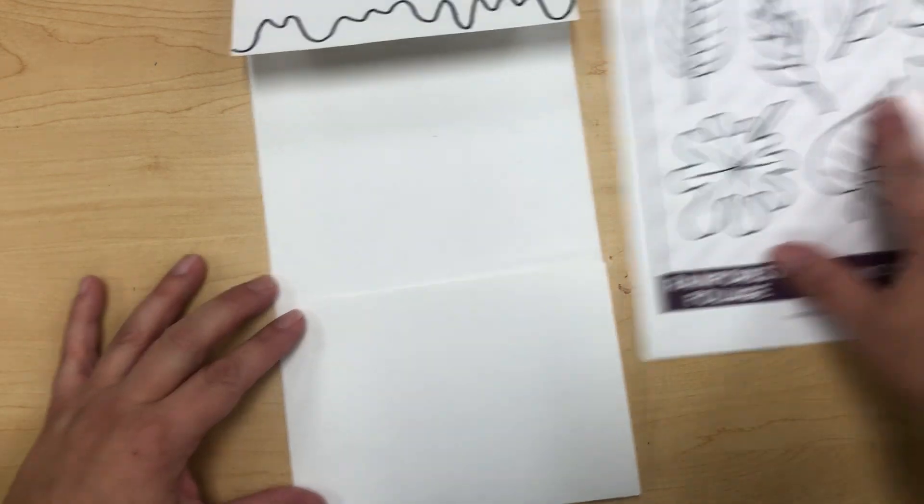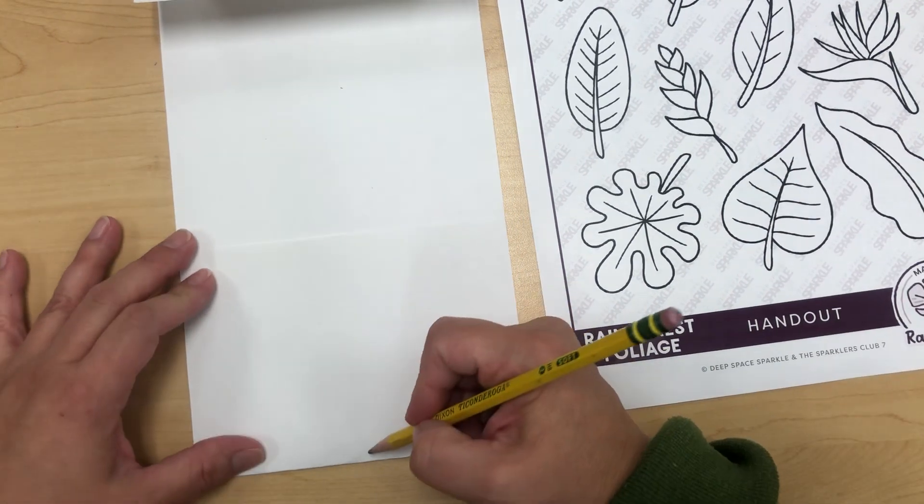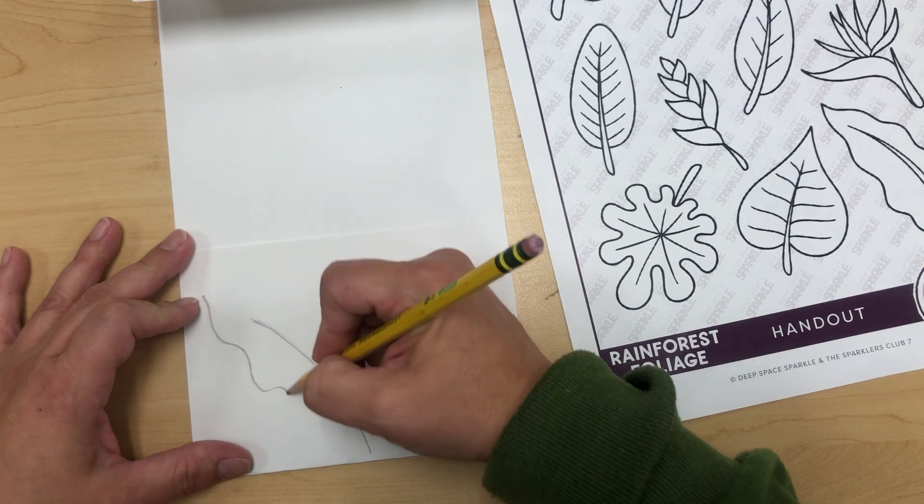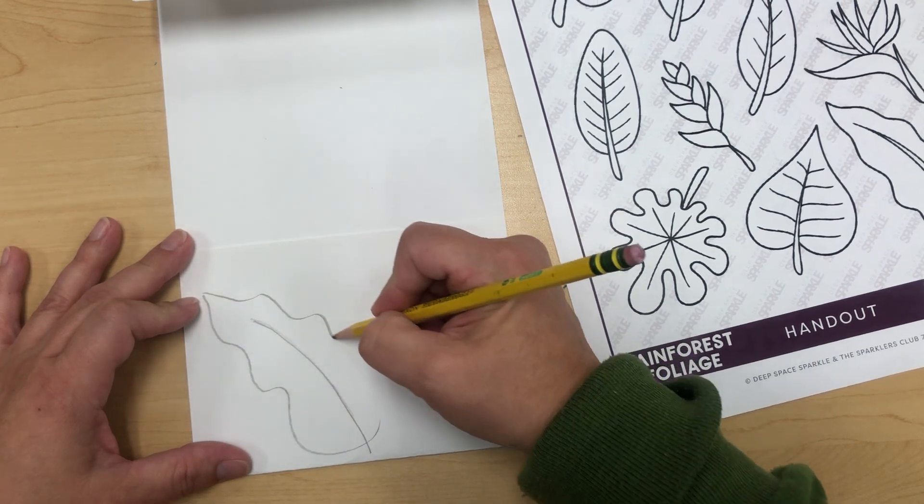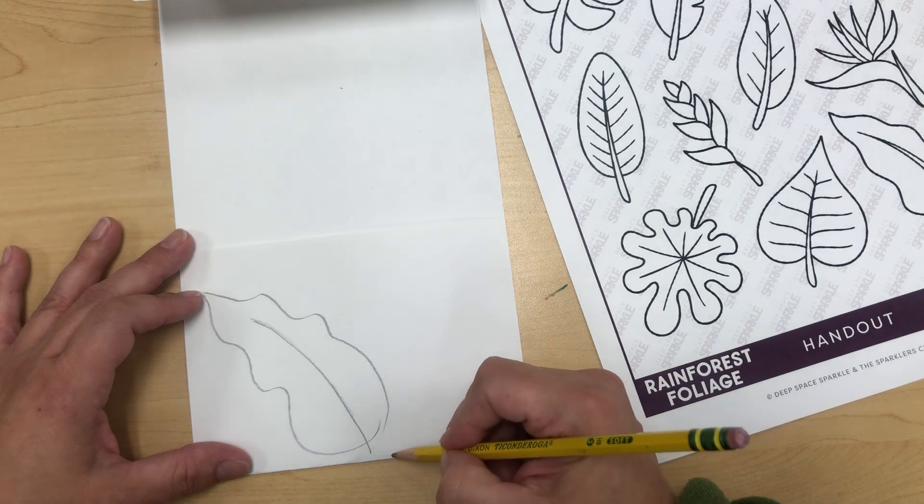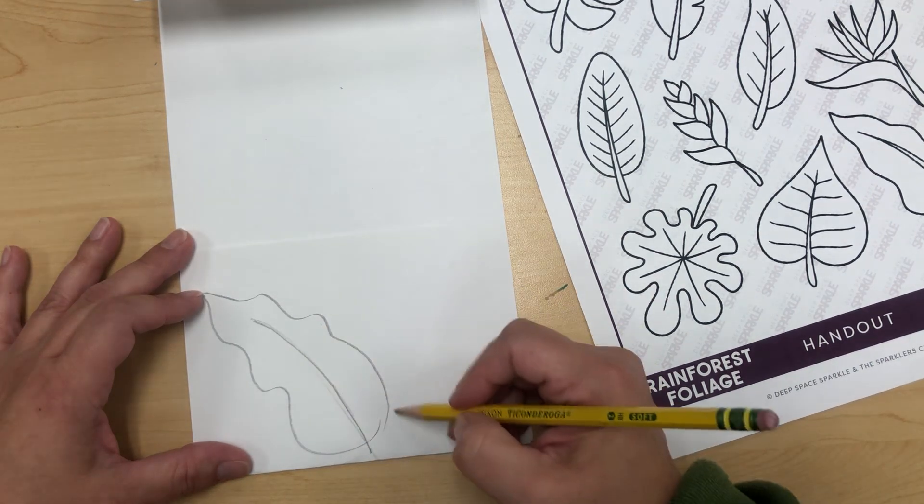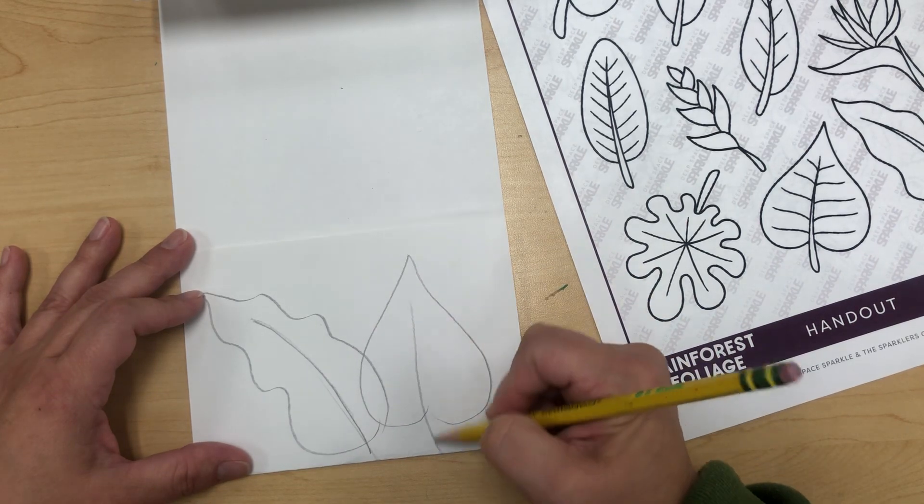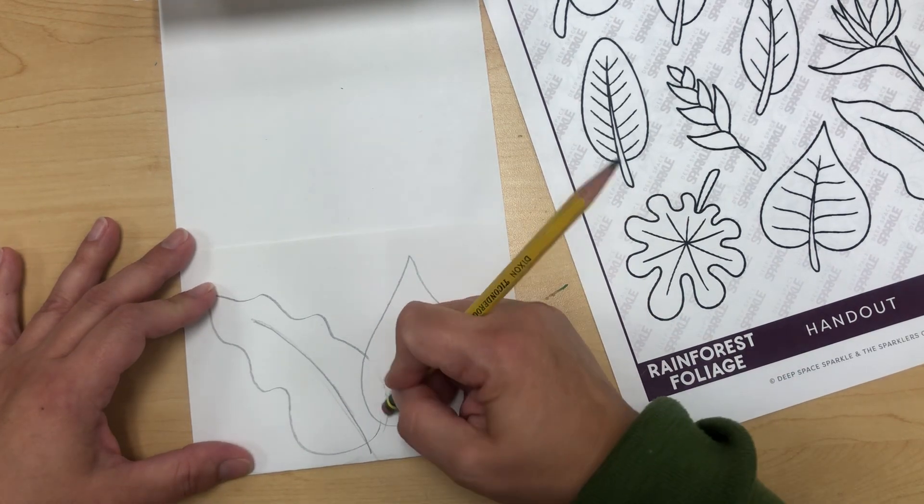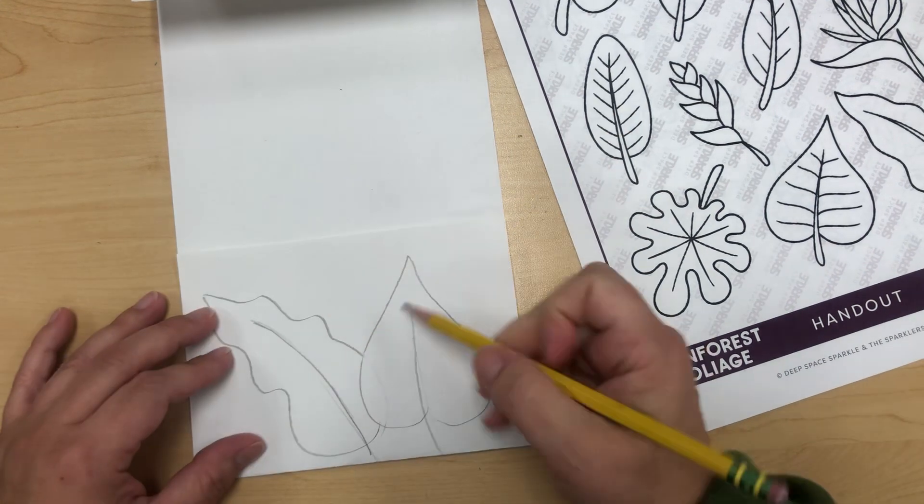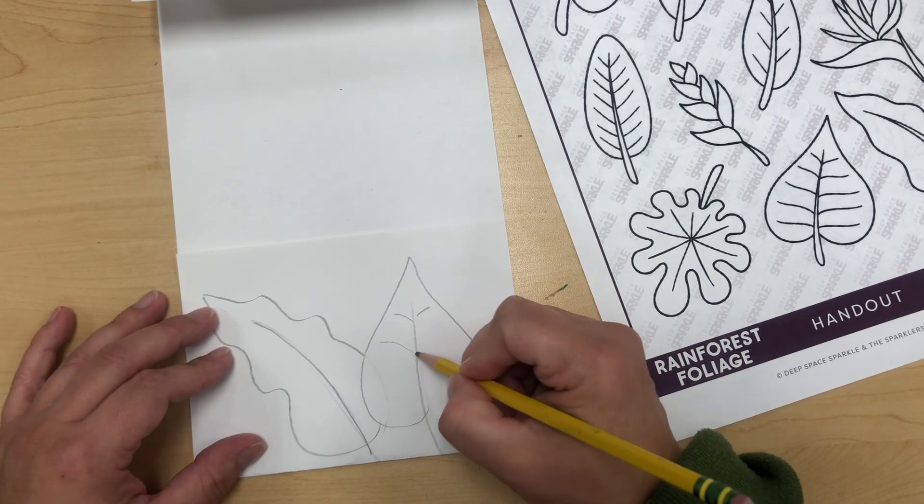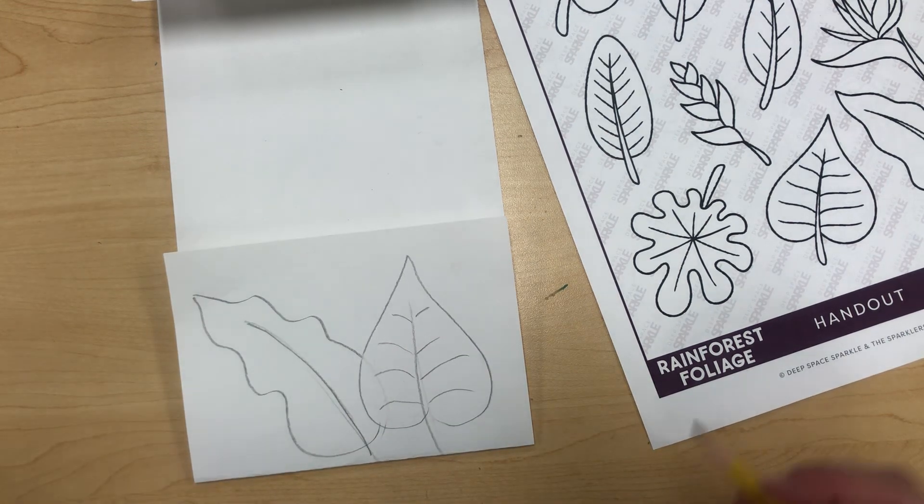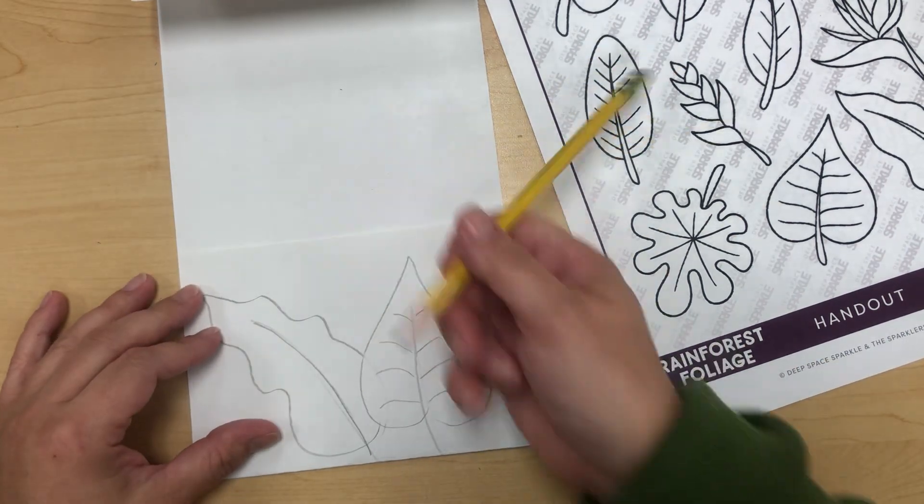This bottom one here, we're going to draw some leaves. This is where this will come in handy. You can have these banana leaves. Leaves are organic, so it doesn't have to be perfect. You're just going to get those leaves on here. This one kind of has a heart shape to it. This is going to be on top, so I'm going to erase. I would suggest doing that erasing now because if you wait to the end, then it becomes more difficult.